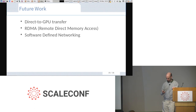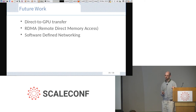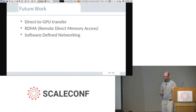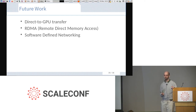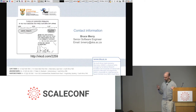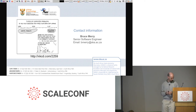Future directions include moving data directly from the network card into a GPU without going through system memory — that should avoid dropped packets and improve bandwidth, but requires an NVIDIA Tesla rather than the cheaper GeForce cards we mostly use. A similar idea is RDMA: telling a remote system to write data into memory without involving the host CPU. We also have someone looking at software-defined networking as a potential replacement for multicast. And as someone said earlier, it's not a ScaleConf talk unless you have the obligatory XKCD cartoon.